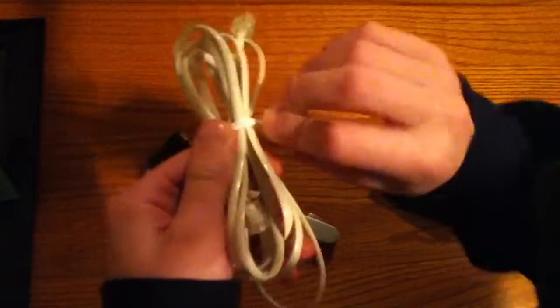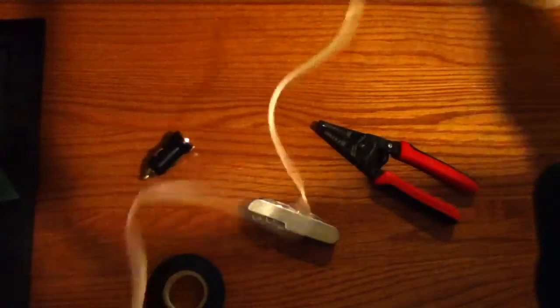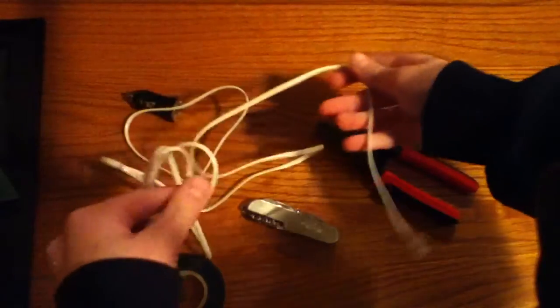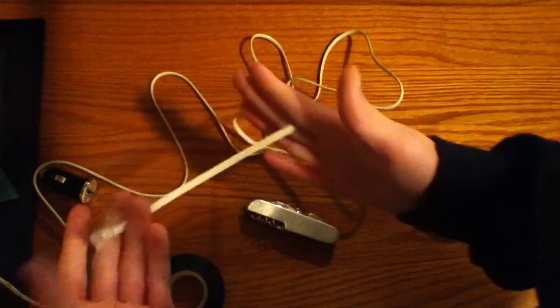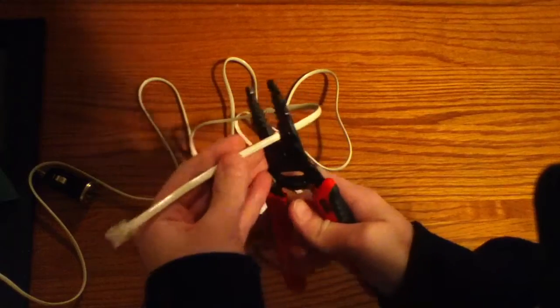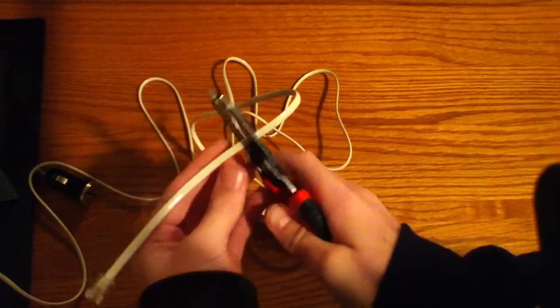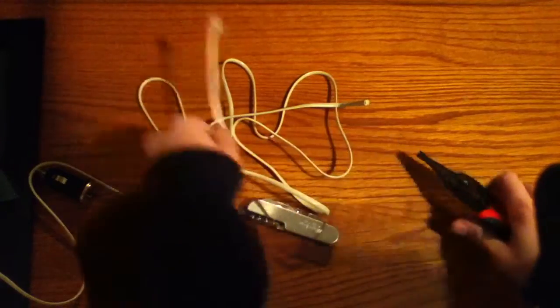The first thing you're going to do is get your phone line cable. We're going to cut off one of the ends and strip the wire. This one is pretty long, about 6 to 7 feet. So I'm going to cut mine off right about here.